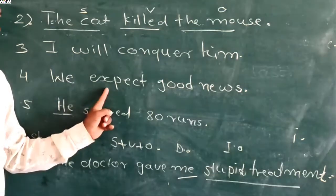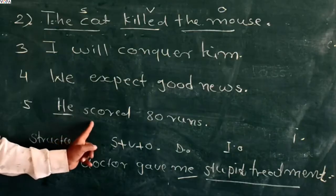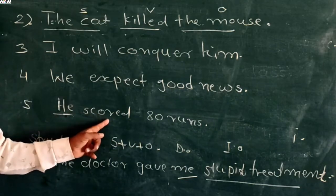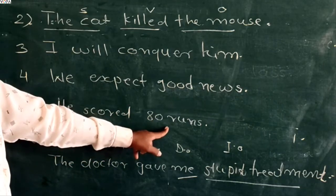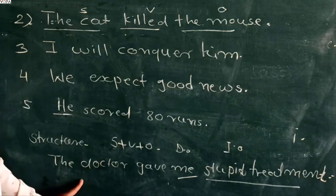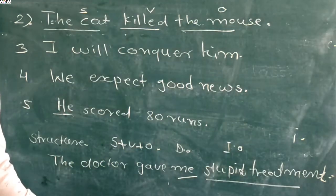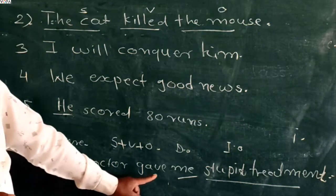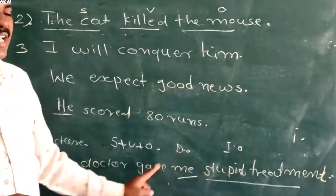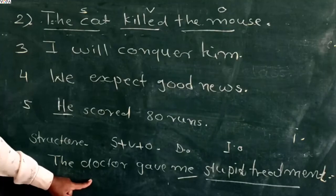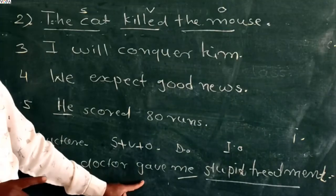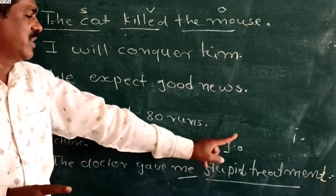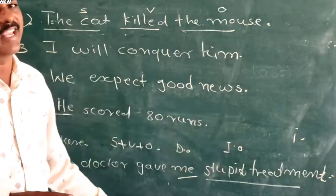'He scored 80 runs' — 'he' is the subject, 'scored' is the verb, and '80 runs' is the object. Here we also see the concept of direct object and indirect object.